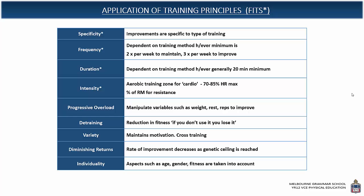When we're talking about intensity, we're talking about how hard. So: frequency — how often; duration — how long; intensity — how hard. You need to be within the aerobic training zone for a cardiovascular or cardiorespiratory workout, which is 70 to 80% of heart rate max. We also talk about intensity as a percentage of RM in terms of resistance training, but we'll come to that more when talking about training methods.